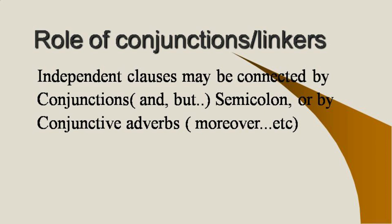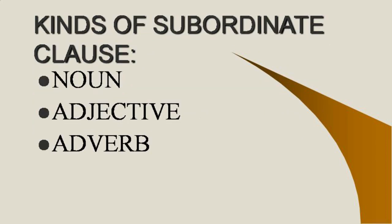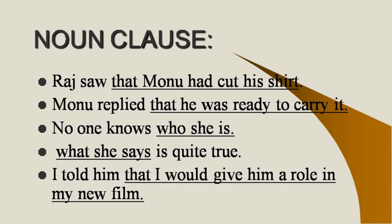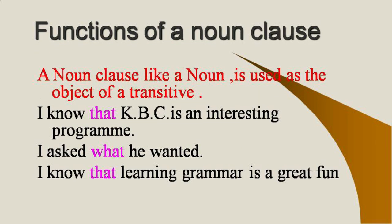Noun, adjective, and adverb clauses — these are the kinds of subordinate clauses. The first one is the noun clause. After the example, see its function. Noun clause.